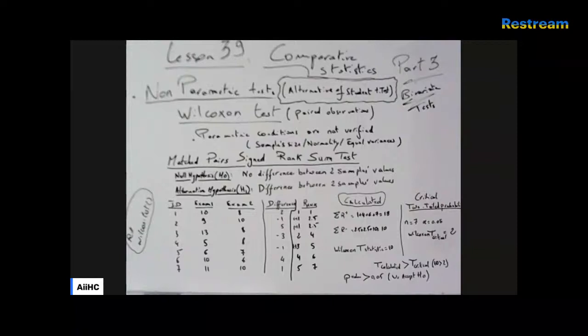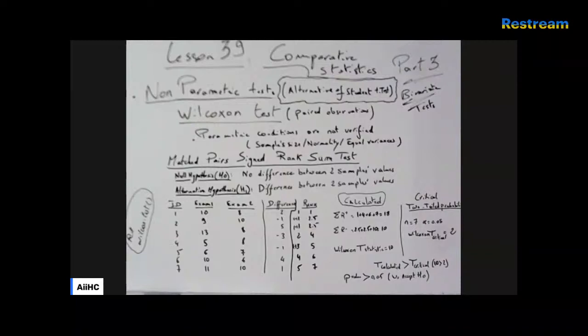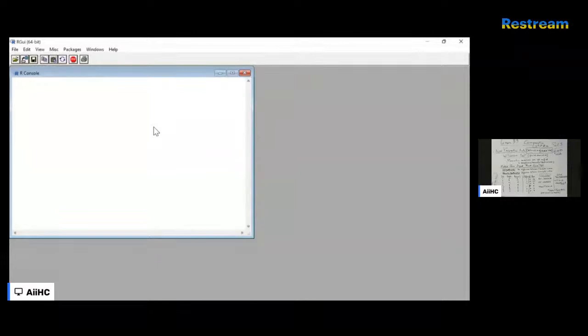Now let's do a quick application in R. The rank function in R takes your vector of differences — 2, −1, 5, −3, −1, 4, 1 — and returns the rank values. If you're short on time and don't want to rank manually on paper, you can use the rank function quickly in R.